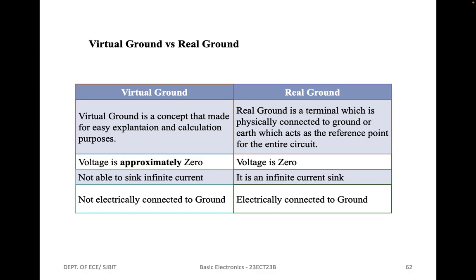The difference between virtual ground and real ground: virtual ground is a concept used for easy explanation and calculation purposes — voltage is approximately 0. Real ground is a terminal physically connected to ground or earth, which acts as the reference point for the entire circuit. In real ground, the voltage is exactly 0; in virtual ground it is approximately 0, not exactly 0. Real ground is an infinite current sink, but virtual ground cannot sink infinite current. Virtual ground is not electrically connected to ground; real ground is.